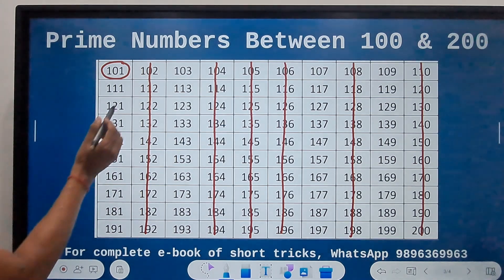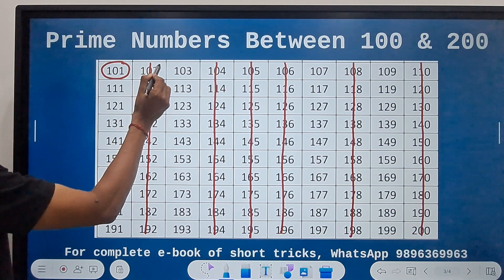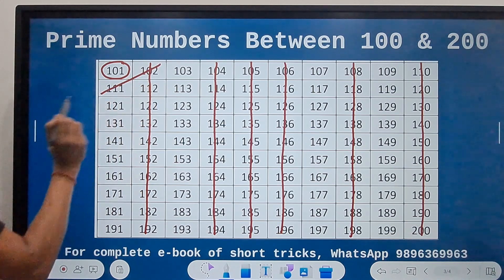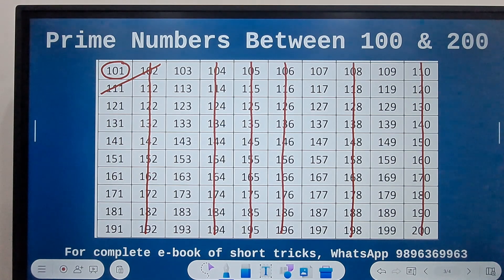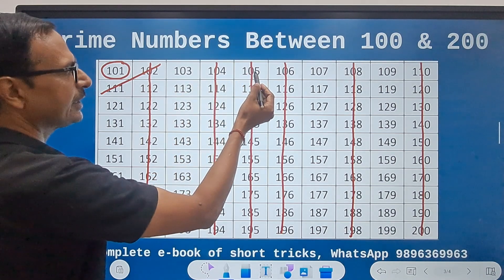Let's start from 102. So 102 is not prime, and look at this diagonal. Let's cross out the diagonal which contains 102. After that, leave two numbers, 103 and 104, and move on to 105.